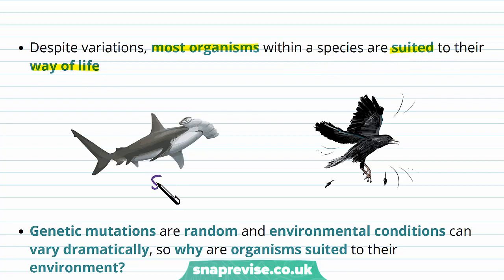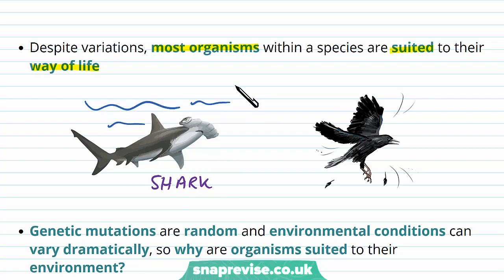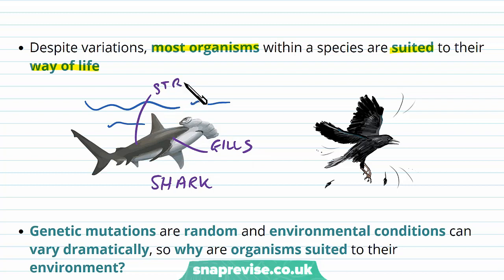For example, if we look at a type of shark like a hammerhead shark, we can see that it's adapted for the environment that it lives in. It's adapted to live underwater — it has gills to exchange oxygen and carbon dioxide with the water, it has a streamlined body to swim very fast, and it has particular other features which we could go into in a lot more detail.